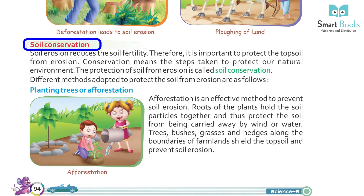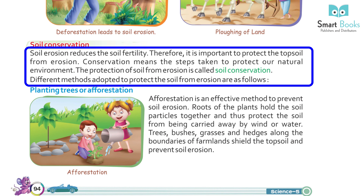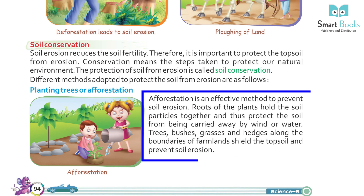Soil Conservation: Soil erosion reduces soil fertility. Therefore, it is important to protect the topsoil from erosion. Conservation means the steps taken to protect our natural environment. The protection of soil from erosion is called soil conservation. Different methods adopted to protect the soil from erosion are as follows. Planting trees or afforestation is an effective method to prevent soil erosion. Roots of plants hold the soil particles together and protect the soil from being carried away by wind or water. Trees, bushes, grasses, and hedges along the boundaries of farmland shield the topsoil and prevent soil erosion.